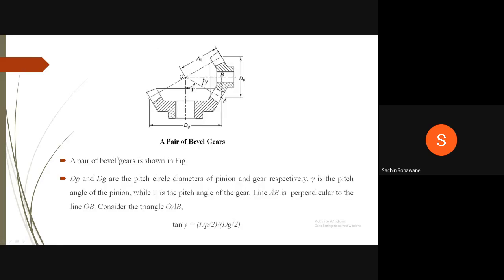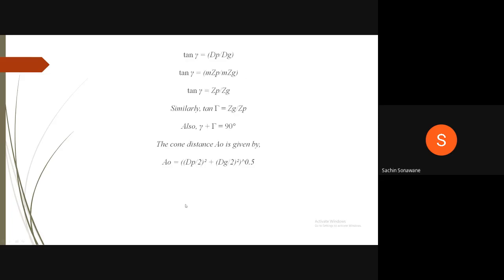A pair of bevel gears is shown in figure. Small gamma is the pitch angle of the pinion and capital gamma is the pitch angle of the gear. Dp and Dg are the pitch circle diameters of pinion and gear respectively. Line AB is perpendicular to OB. From triangle OAB, tan(gamma) = (Dp/2)/(Dg/2) = Dp/Dg = Mzp/(Mzg) = Zp/Zg. Also, small gamma + capital gamma = 90°. The cone distance A0 = √[(Dp/2)² + (Dg/2)²].